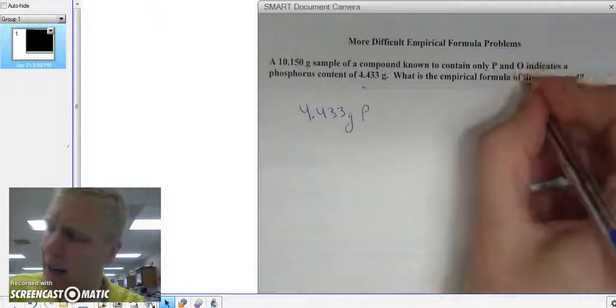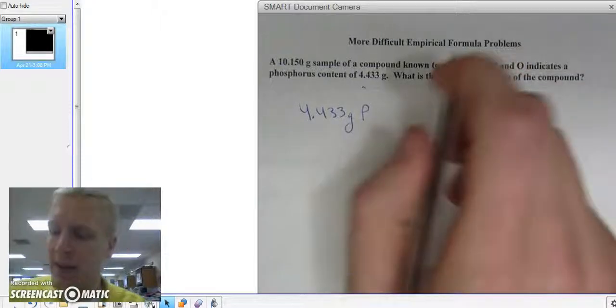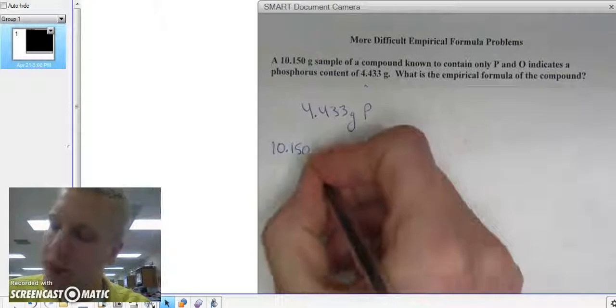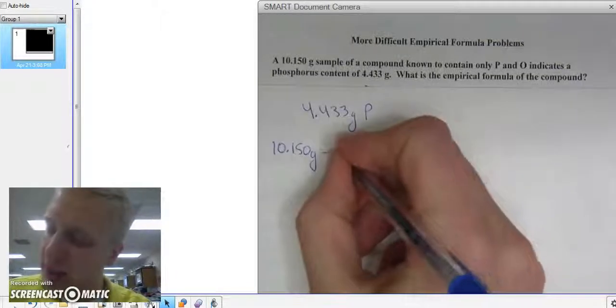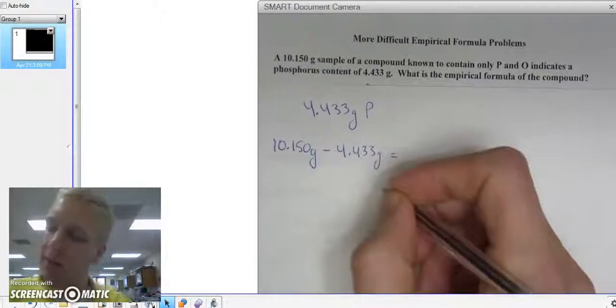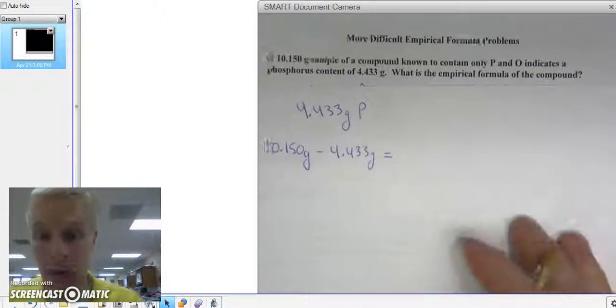I need to find what the mass of oxygen is. They don't directly tell me what it is, but they do tell me my total mass is 10.150 grams. So if I just subtract the mass of the phosphorus, 4.433 grams, that should give me the mass of the other element, in this case, the oxygen.